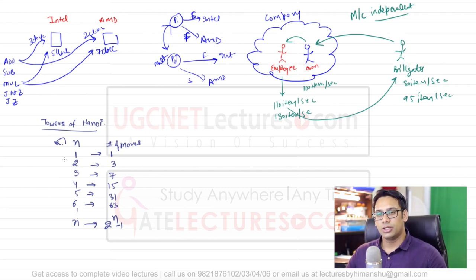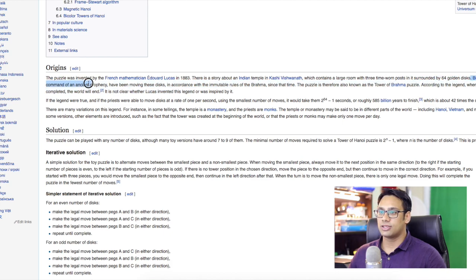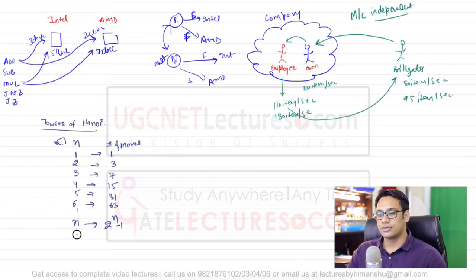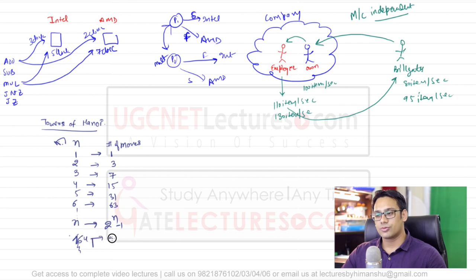A client has come to us with this problem, and we have taken the project. Classically, the Towers of Hanoi problem involves 64 plates. As you can find on Wikipedia, there is a story about an Indian temple in Kashi Vishwanath which contains a room with three posts surrounded by 64 golden discs. So the classical problem is with 64 discs, meaning 2 raised to the power 64 minus 1 moves — a very, very large number.